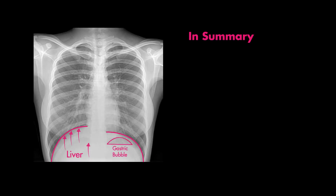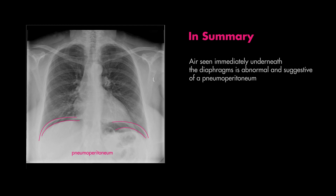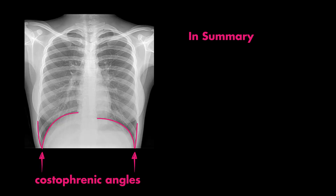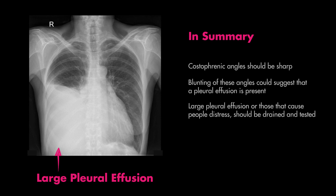In summary, the diaphragms normally have a curved shape. Remember that the right hemidiaphragm will appear higher than the left because of the position of the liver underneath it. Sometimes you can see air underneath which represents colonic or gastric air, but air immediately underneath the diaphragms can be a sign of pneumoperitoneum and should not be missed. Lastly, make note of the costophrenic angles — these should be sharp and well-defined, and blunting of these angles can indicate that a pleural effusion is present.